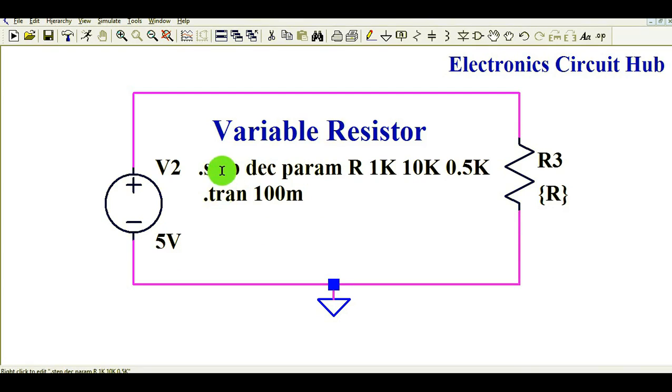So I have written already here. So you can see, if I click on, this is dot step, and I am simulating at the moment in decade. So I write decade, and you can see, then param, then resistance.